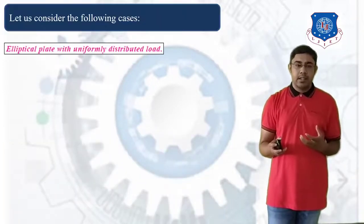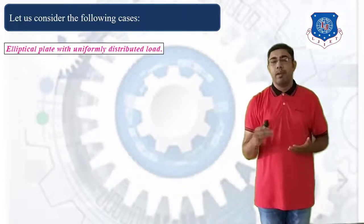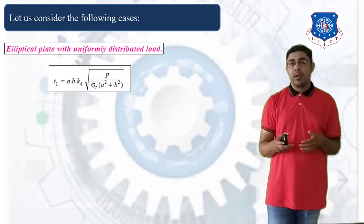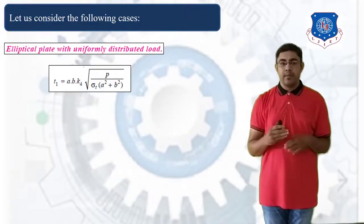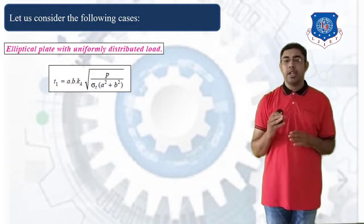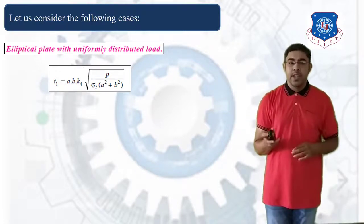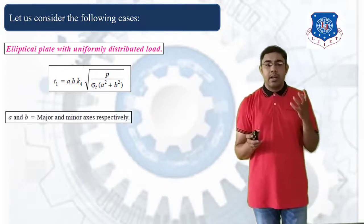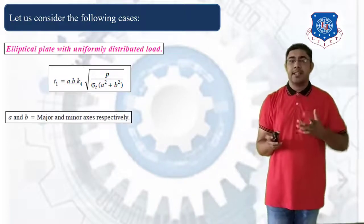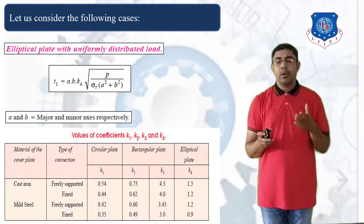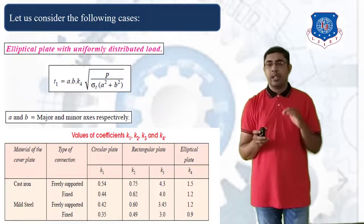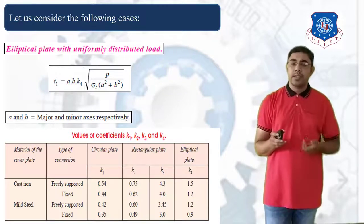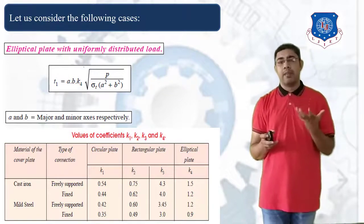The third case is an elliptical plate with uniform distributed load. In this case, T1 = (a × b × K4 × √P) / (√(σT × (a² + b²))), where a and b are the major and minor axes respectively. The value of K4 for the elliptical plate is calculated from tables based on the material of the plate and the types of connections.